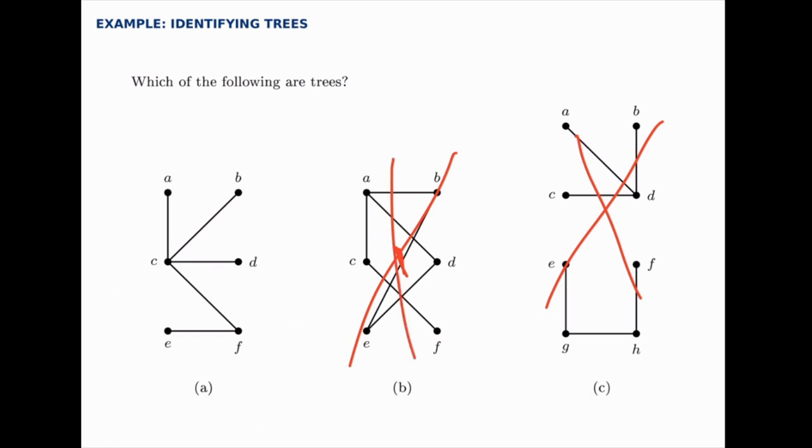But part A is connected. And yet, if you remove any edge, for instance, if I remove that one, it would disconnect this part from this part. So it's connected, but it's barely connected. So that is a tree.